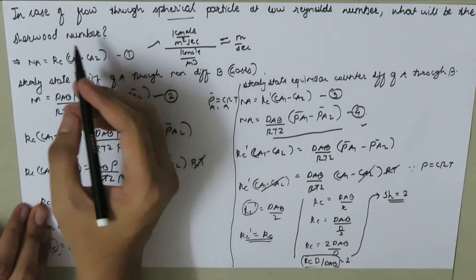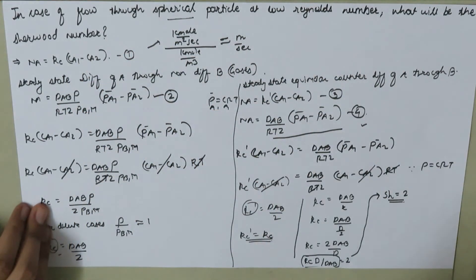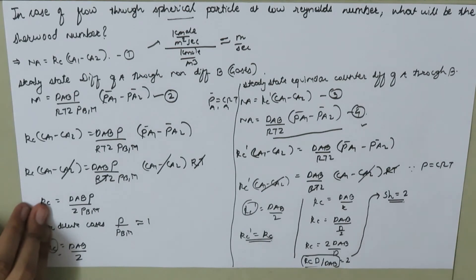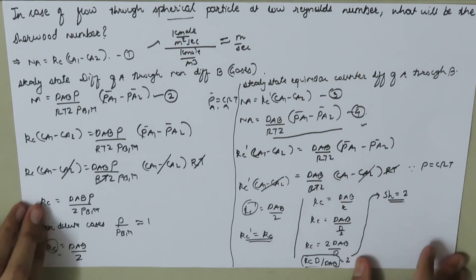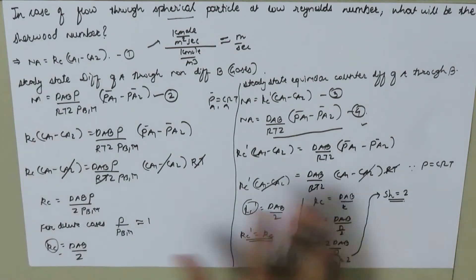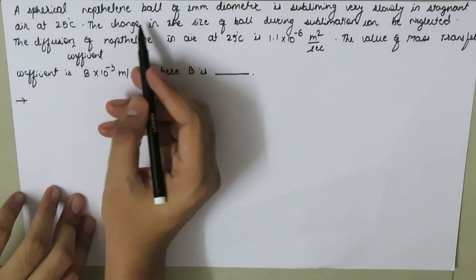Hence we have proved that in the case of flow through spherical particles at low Reynolds number, the Sherwood number is equal to 2. Now let's solve an example based on this. The problem: a spherical naphthalene ball of 2 mm diameter is subliming very slowly in stagnant air at 25 degrees Celsius.